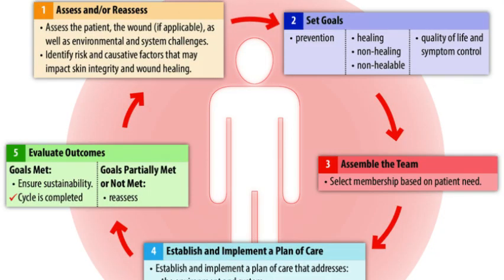Looking at the circle of care for best practice, we have five different stages: assess or reassess, set goals, assemble a team, establish and implement a plan of care, and evaluate outcomes. Sometimes you need to go back around the circle if a wound isn't healing or if you don't have the outcome you were hoping for — you reassess and go through all the stages again.